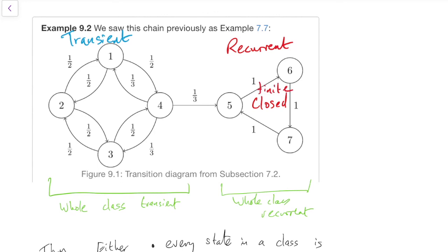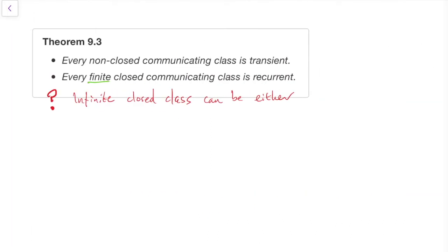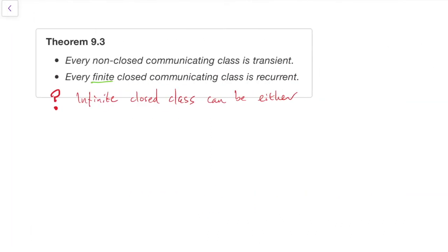Finite, because it only has three states in it, and three is indeed a finite number. Whereas this communicating class over here is not closed, because you can get out of it. So we can just say straight away, oh, it's a non-closed communicating class, it's transient. We don't actually have to do any work. It's dead easy to tell. So that theorem there will make it really easy for us most of the time to tell whether a class is transient or recurrent.